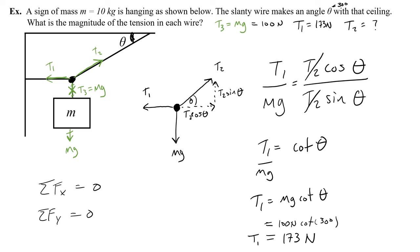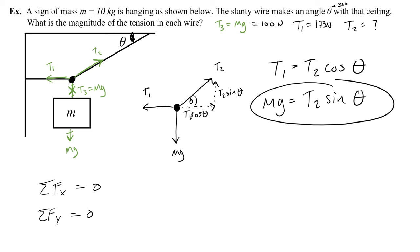Now, how do I find T2? Well, I've got these two original equations. Let me get rid of this work right here. I've got the two original equations that I wrote, and now I can either plug T1 back into my T1 equals T2 cosine theta equation, or I can just use this equation right here to solve for T2. T2 is going to be equal to mg over sine theta. So this is going to give you 100 newtons over sine of 30 degrees, which sine of 30 is 1 half. So 100 over 1 half is like 100 times 2, so 200 newtons. We found the tension in the slanty wire.